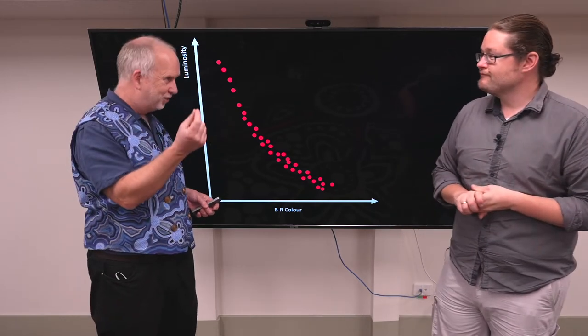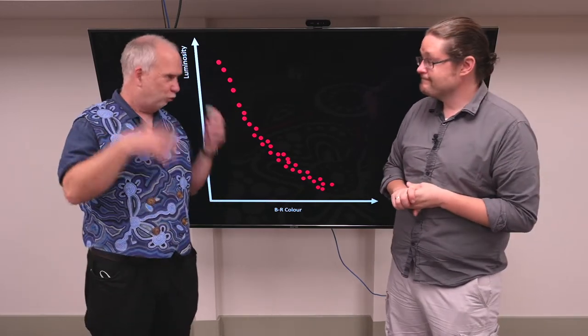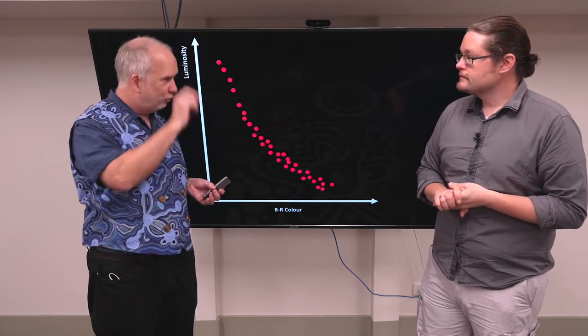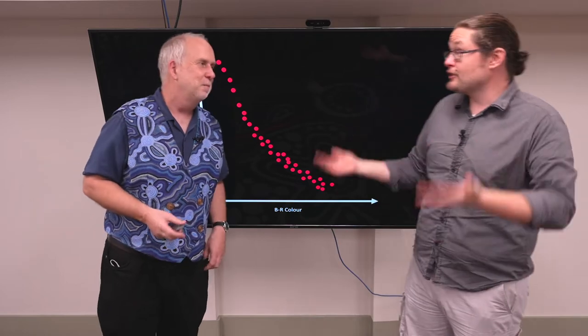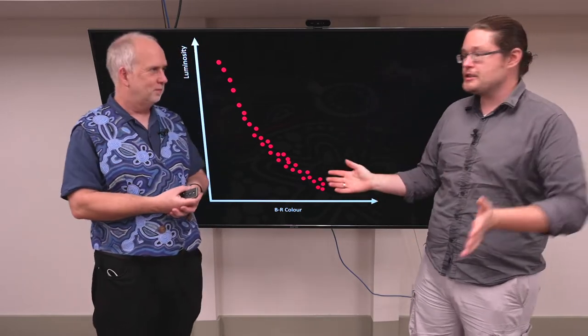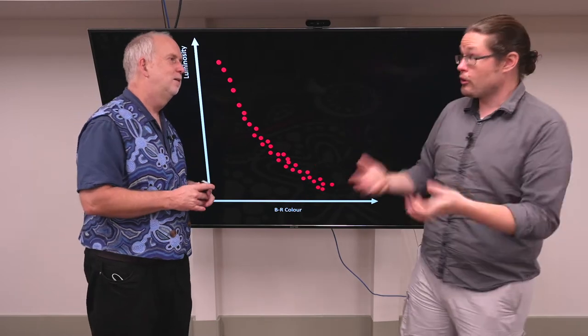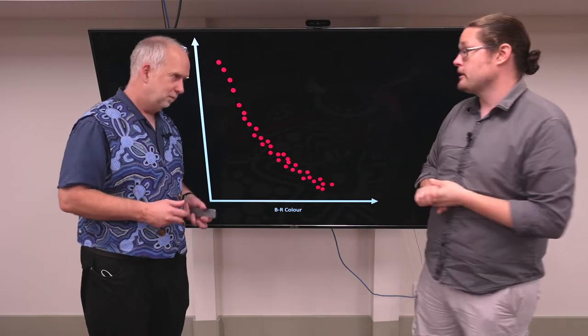Of course you can't measure it for one star, you need a cluster or a group or a galaxy or something, but you take a picture of it, you measure the brightness and the colour of all the stars and then you get a diagram like this. That's right and there's a lot of them and as you said, very easy to do and you can take different colours and so you can really easily get a large sample for your diagram quickly.